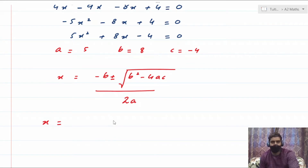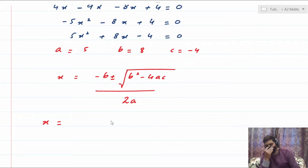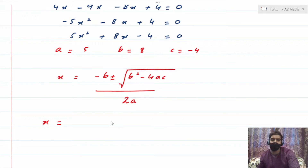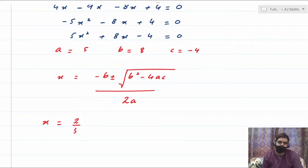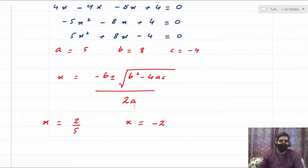Hitting the calculator, the first value is x = 2/5 and the second value is x = −2. So you get two values. That's the end of the first part. I always recommend the squaring method — you're eventually left with a quadratic. Solve by factoring if possible, otherwise apply the quadratic formula straight away.